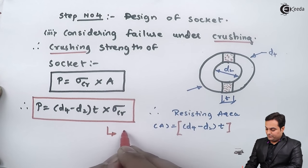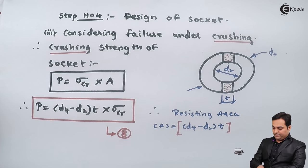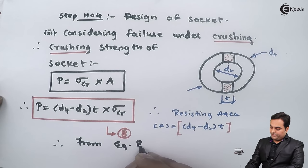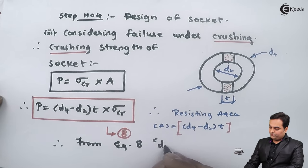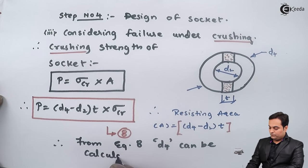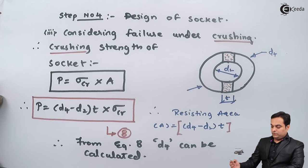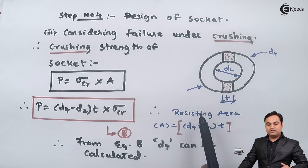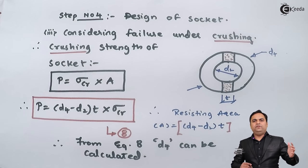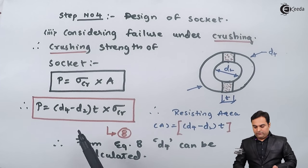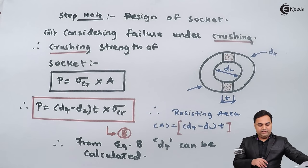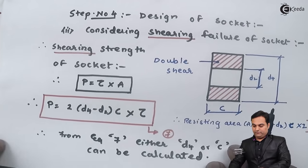Therefore crushing strength of socket: P equals crushing stress sigma_cr into area D4 minus D2 into T. This is equation number eight, from which D4 can be calculated. So first we get D4 from crushing failure, then we get C from the shearing failure equation number seven. This completes the design of socket.